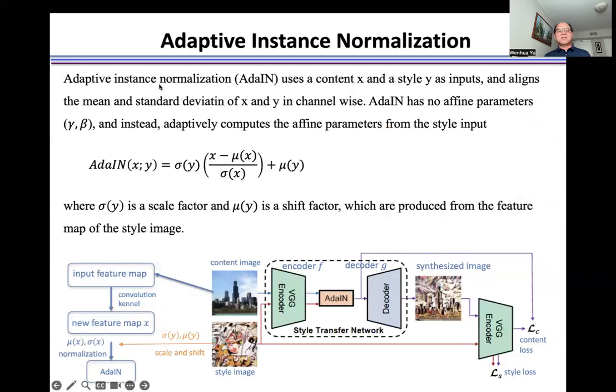Adaptive Instance Normalization (AdaIN) uses content X and style Y as inputs, and aligns the mean and standard deviation of X and Y in each channel.